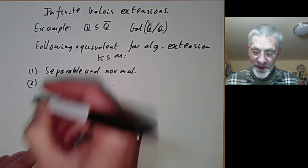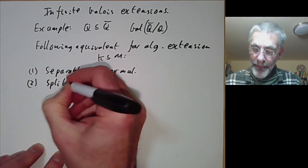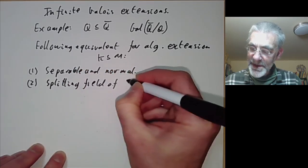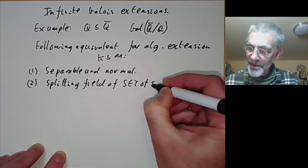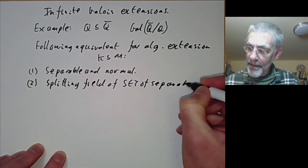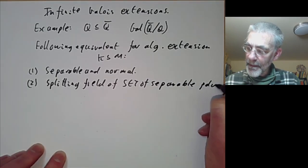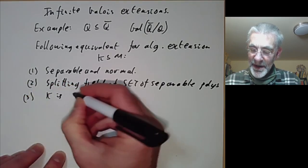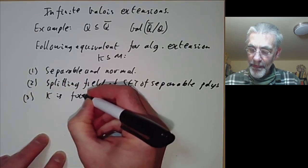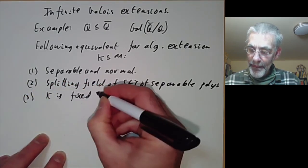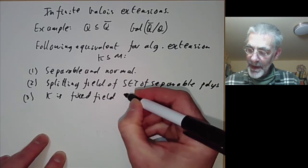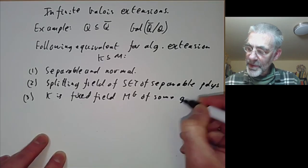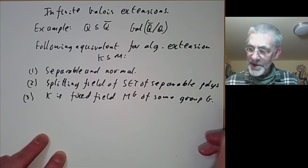Secondly, it is the splitting field of a set of separable polynomials. And thirdly, K is the fixed field M^G of some group G acting on M.